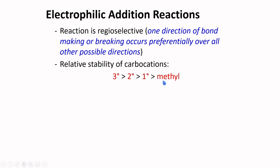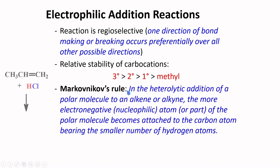The regioselective behavior of hydrohalogenation was observed by Markovnikov, for which he formulated his rule. In the modern sense, it states that in the heterolytic addition of a polar molecule to an alkene or alkyne, the more electronegative atom or part of the polar molecule becomes attached to the carbon atom bearing the smaller number of hydrogen atoms. What it means for hydrohalogenation is that in a double bond, the carbon with the smaller number of hydrogen atoms, which is this carbon, becomes attached to the more electronegative part of the molecule being added. Chlorine is more electronegative than hydrogen, so it will be attached to this carbon. Hydrogen will be attached to this carbon to form this compound as the major product.